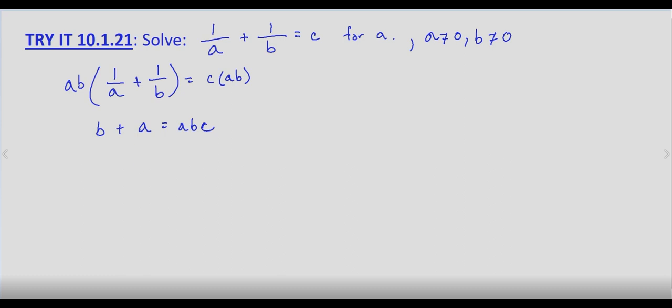I'm going to go ahead and subtract abc from both sides. So we end up with a minus abc. We'll go ahead and leave the b for now. Plus b equals 0.